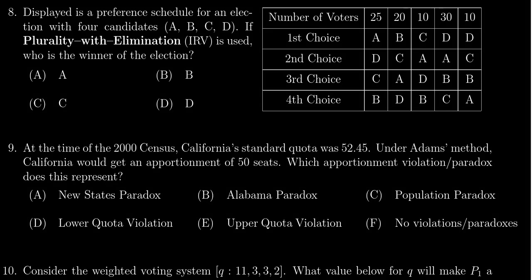In this video we provide the solution to question number eight for practice exam number three for Math 1030, in which we have to determine who's the winner of this election using the IRV method — Instant Runoff Voting, sometimes called ranked choice voting or plurality with elimination. We look for a majority candidate if there is one.